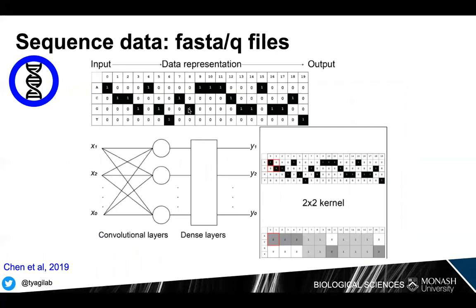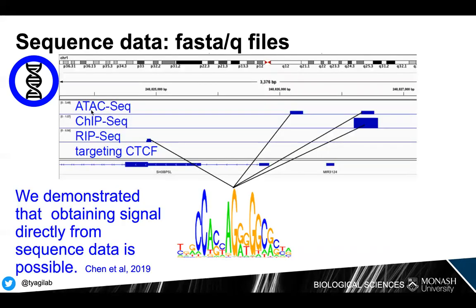The third format of data demonstrates that obtaining signal directly from sequence data is possible — using raw FASTA and FASTQ files. We use a deep learning approach to classify sequences that have the CTCF motif and sequences that don't, and use this to recover signal from multi-omics data with a convolutional neural network. We applied this to ATAC-seq, ChIP-seq, and RIP-seq for three omics data types, recovering signal from sequences enriched for CTCF versus those without the CTCF motif, showing it is possible to work on raw data directly.